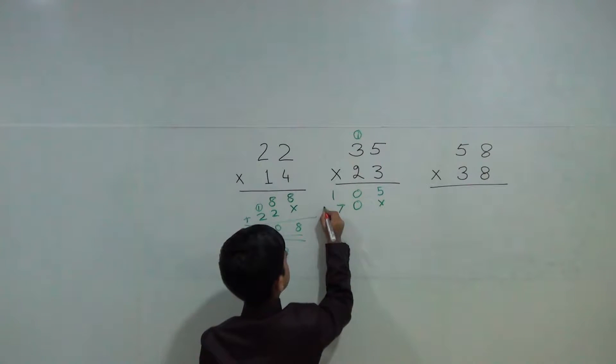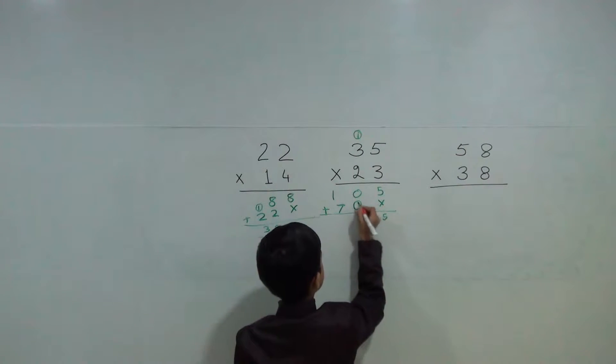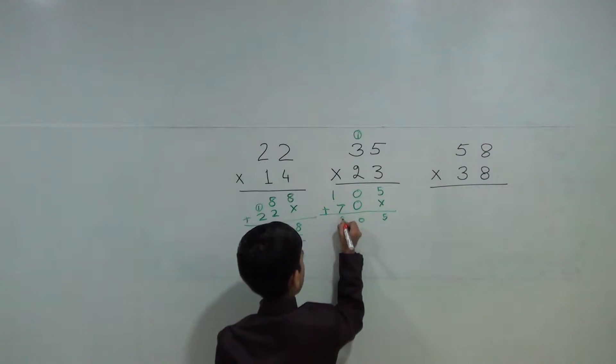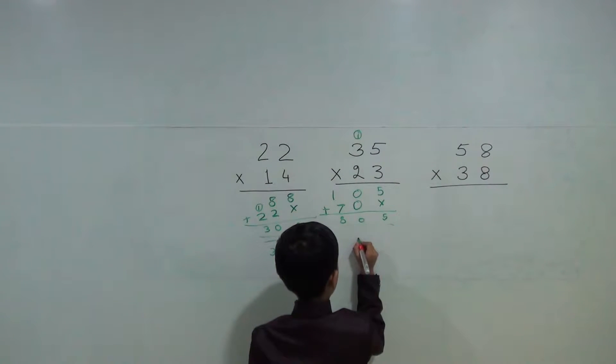Now we will add 5, 0, 8. 8, 0, 5. So answer is 805.